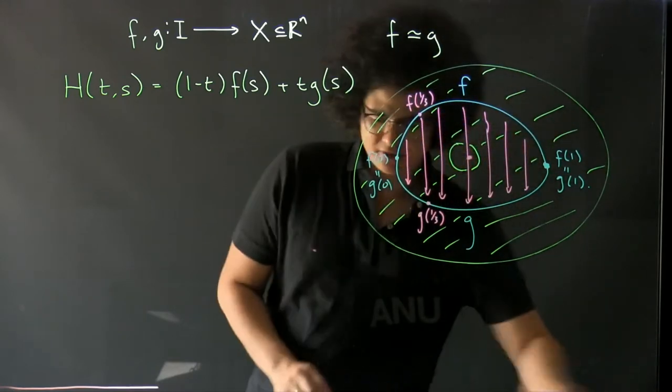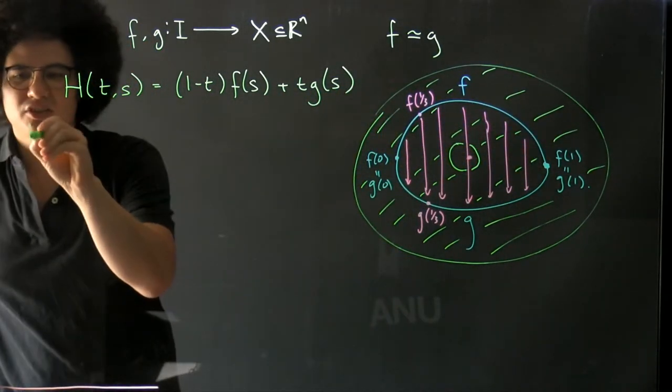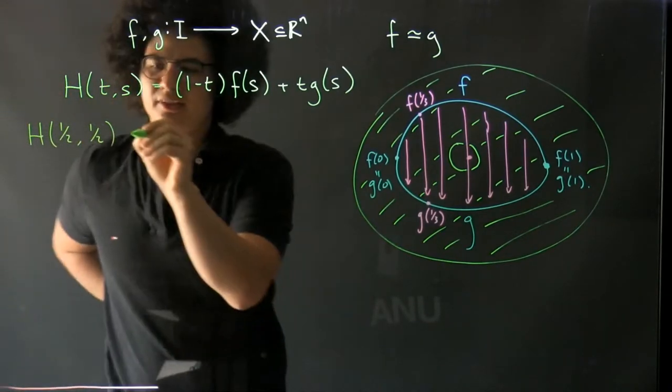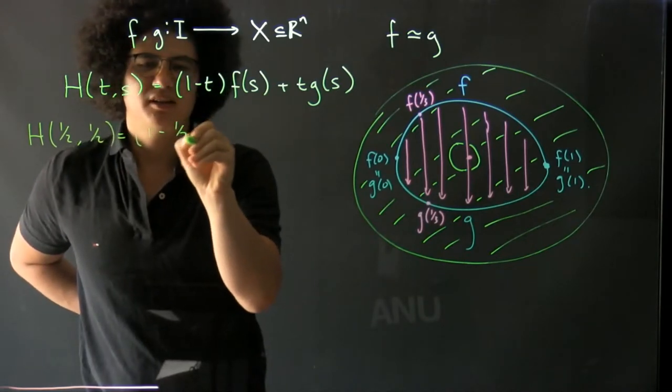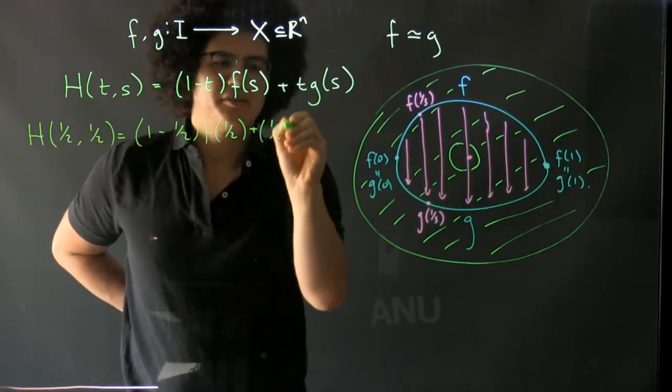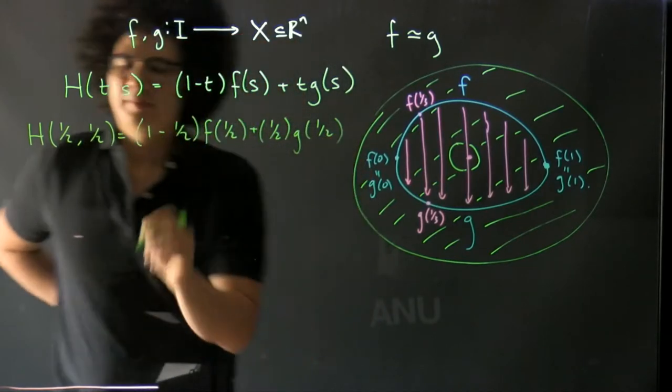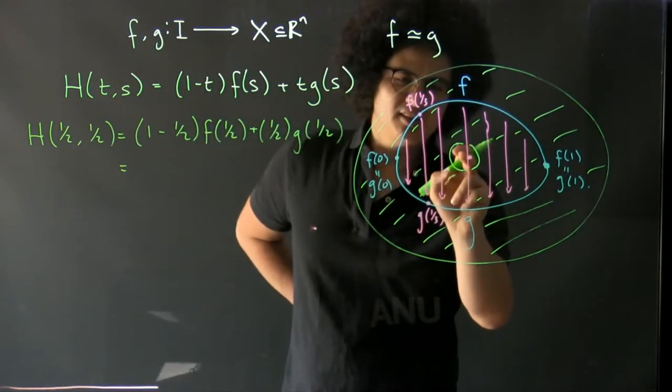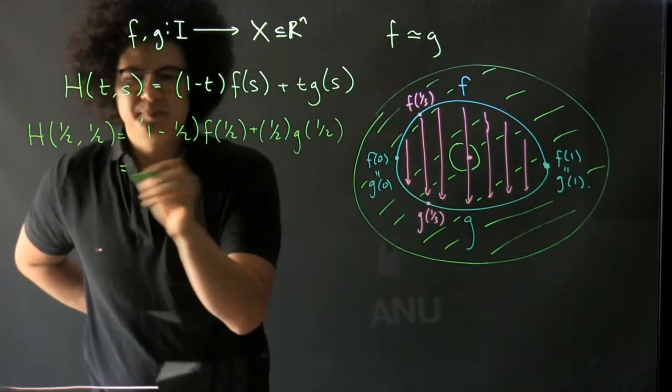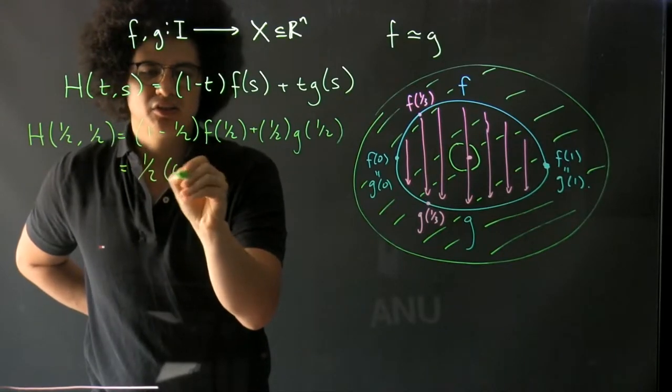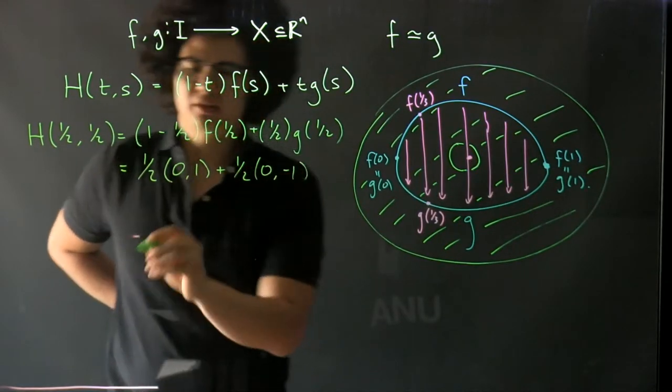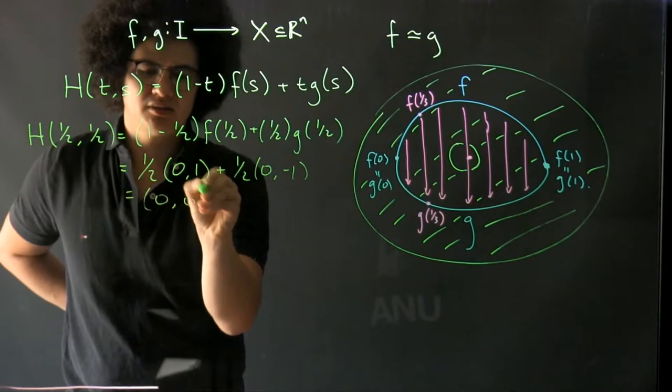So for instance, we have H(1/2, 1/2) going to be (1-1/2)f(1/2) + (1/2)g(1/2). We'll let this be the interval and let f(1/2) be (0,1) and g(1/2) be (0,-1). Then we have 1/2(0,1) + 1/2(0,-1) and that's going to be (0,0), the origin.